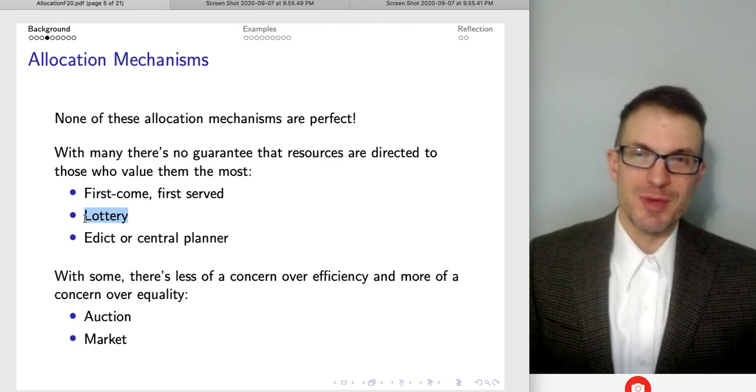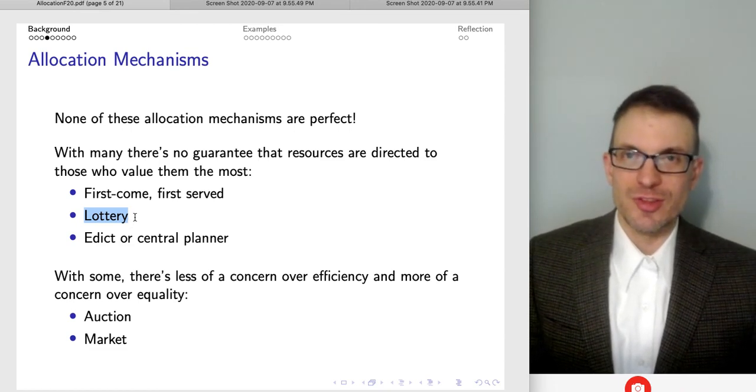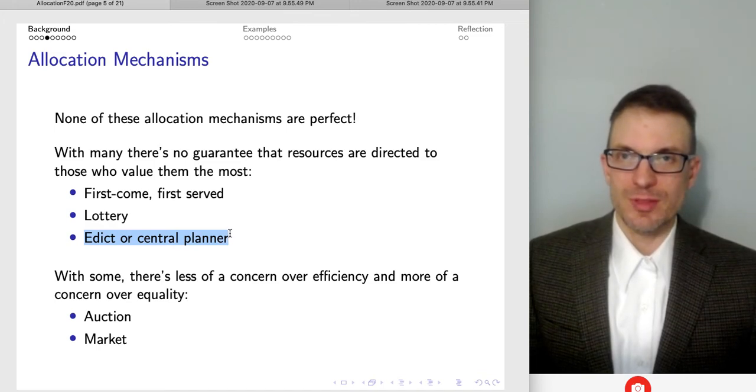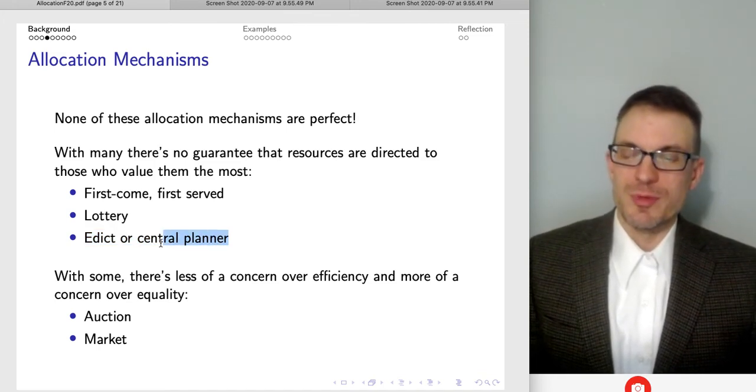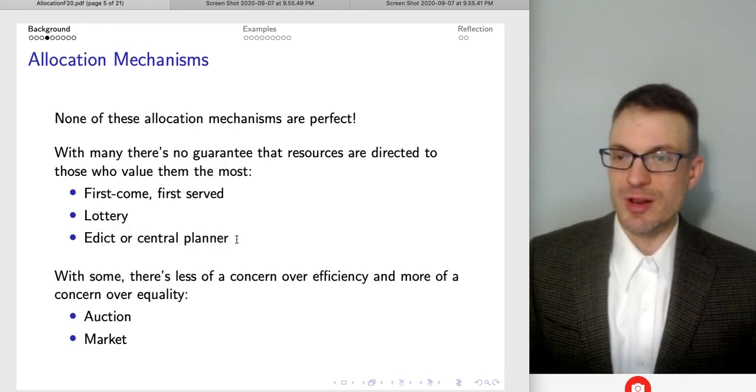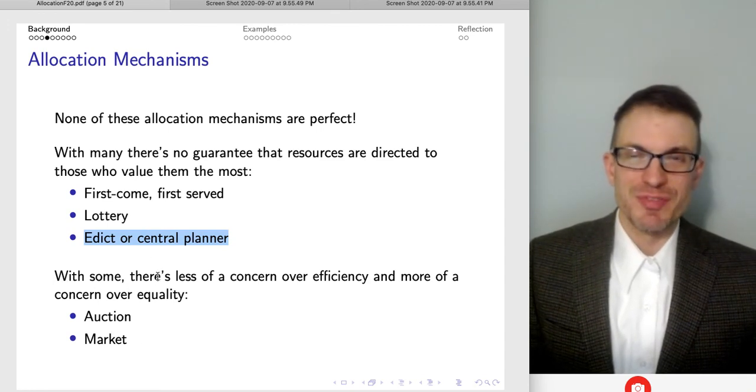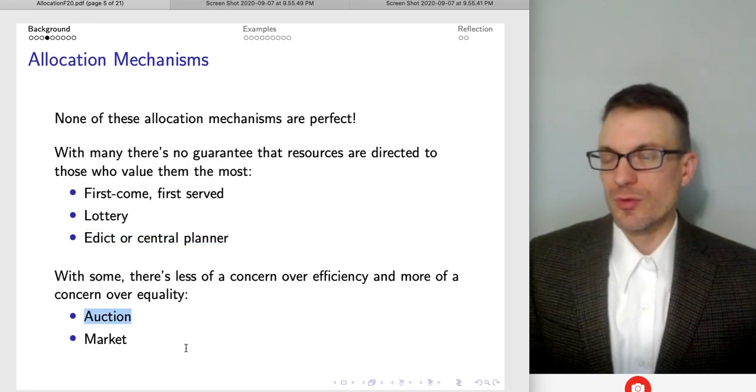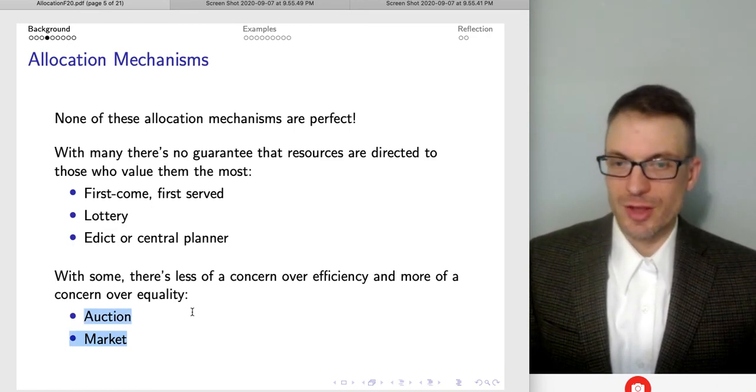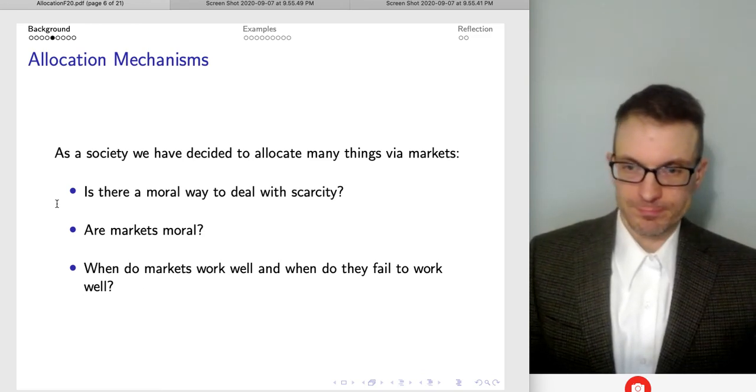Could have a lottery? Well, I mean, that's not necessarily going to guarantee that resources go to those who care the most about them. But everybody presumably has the same equally bad chance at winning the lottery. Could allocate via edict or central planner by government decree. That doesn't seem very good, because the big problem now is government would need to have quite a lot of information to be able to determine where things ought to go. And so that's where inefficiency enters with central planning. Well, with some of these other alternatives that I'd enumerated, there's less of a concern over efficiency, more of a concern over equality. So in the case of auction, or in the case of markets, these should be relatively efficient mechanisms under pretty standard assumptions. We might worry about equality in those cases, though.